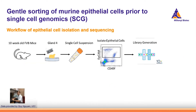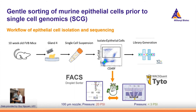Cree at the UCI is working on epithelial cells and is interested in the diversity of the cells, therefore performing single-cell genomics. He takes mammary glands from mice, performs single-cell suspension, and sorts the cells via flow sorting before performing 10x Genomics. He does a head-to-head comparison of the FACS droplet sorter and the MACSQuant Tyto.